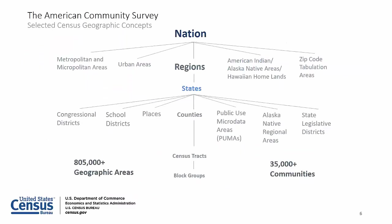The ACS provides data for more geographies on an annual basis than any other household survey. Lower geographic areas fit within the larger areas that are directly connected by lines. Congressional districts, school districts, and places such as cities and towns fit neatly within states and don't cross state boundaries. But they may cross boundaries of counties or metropolitan areas since they're not directly connected. The ACS's unique ability to report on such a wide range of geographies is what gives it such broad appeal.